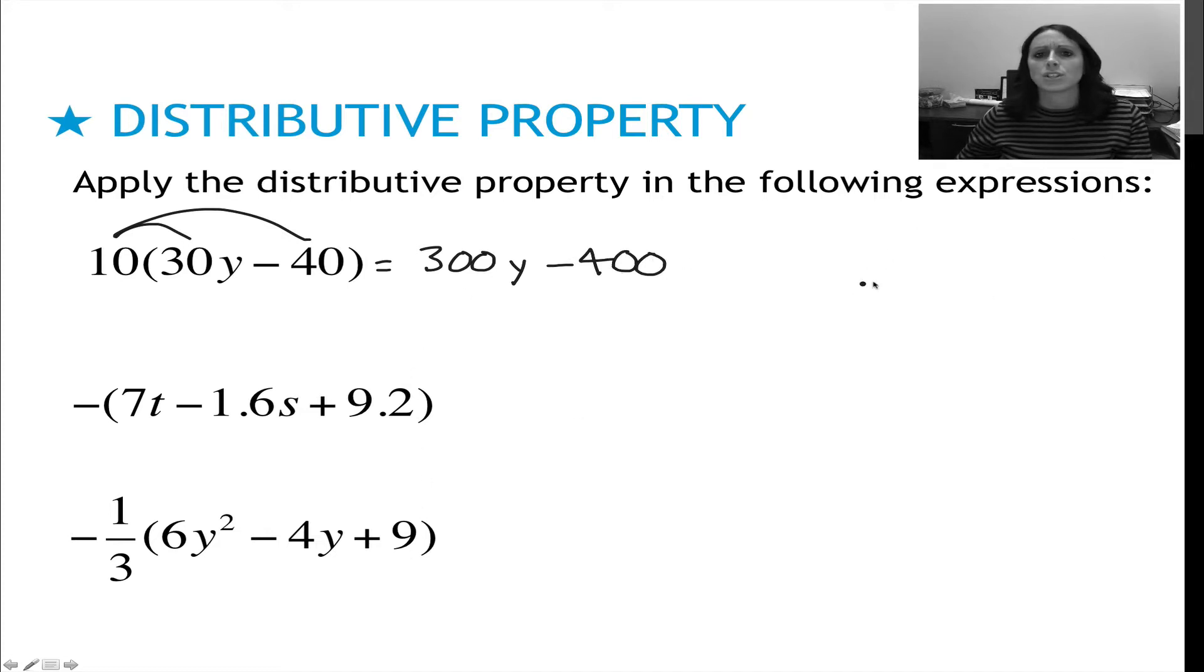Before I continue these questions, I just want to point out that if I had something like 3 times 5 minus 2, I would not use the distributive property in this case, because 5 minus 2 is an expression that I can solve for or simplify. So I would take 5 minus 2, which is 3, and then take 3 times 3, which is 9.